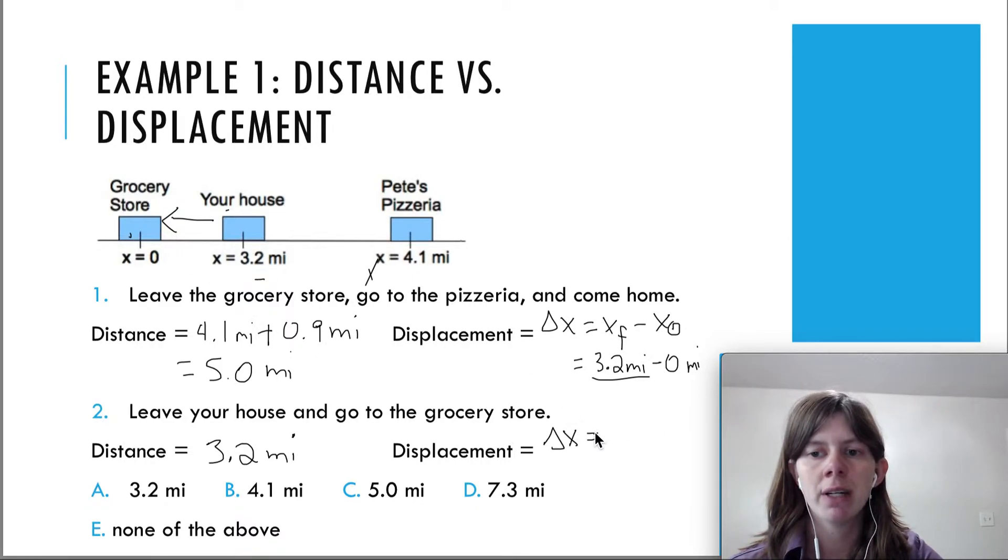And if you use the definition, the final position is zero and the initial position - you subtract the initial position here as 3.2 - you see that that does give you a negative displacement. So the answer is negative 3.2 miles, which was actually not one of the choices above.